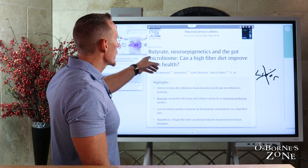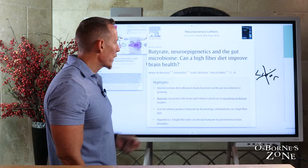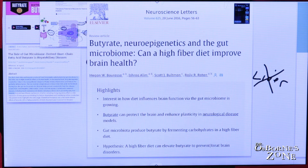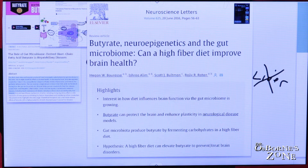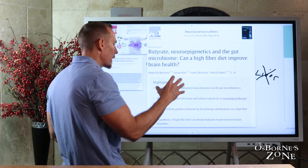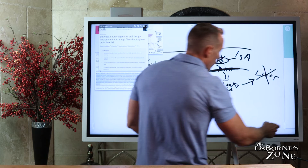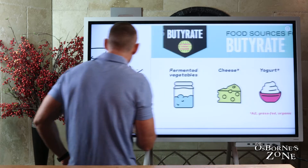From Neuroscience Letters: 'Butyrate Neuroepigenetics in the Gut Microbiome — Can a High Fiber Diet Improve Brain Health?' Butyrate can protect the brain and enhance plasticity in neurological disease models. These are preliminary findings pending human research. The hypothesis: a high fiber diet can elevate butyrate to prevent and treat brain disorders. There are also research studies linking neurological disorders to low fiber, and inflammatory disorders linked to low fiber intake.